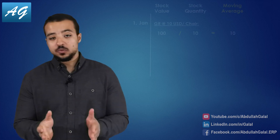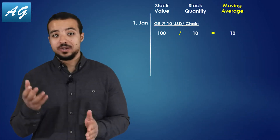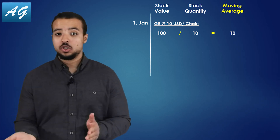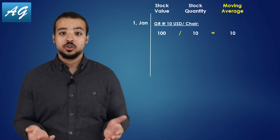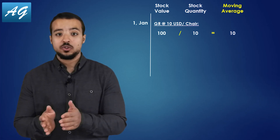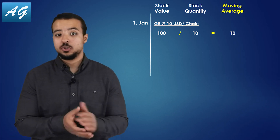Let's go back to our example. On the 1st of January, we received 10 shares for 10 USD each, so the moving average is 10 USD per share.